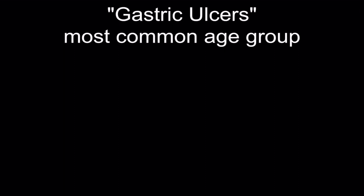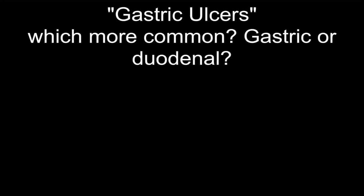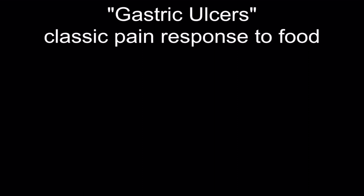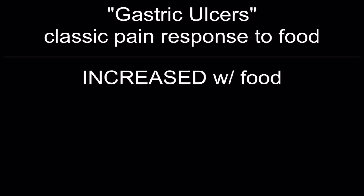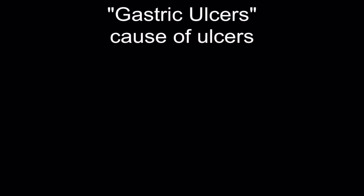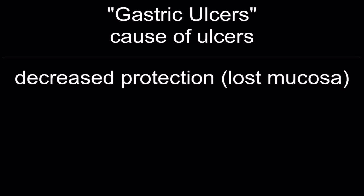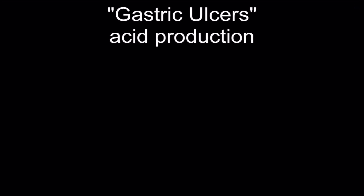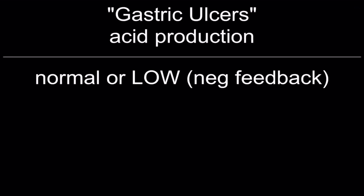Most common age group for gastric ulcers: 40 to 70 year olds. Duodenal ulcers are more common than gastric ulcers by two times. Classic pain response: pain increased with food in gastric ulcer. Cause of gastric ulcer: decreased protection or loss of mucosa. Acid production in gastric ulcers is normal or low due to negative feedback. Ulcers associated with increased gastric acid: pre-pyloric, pyloric, co-existent with duodenal ulcers.